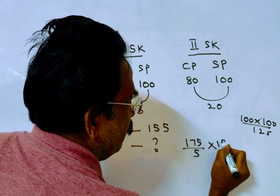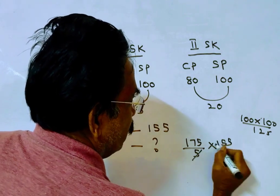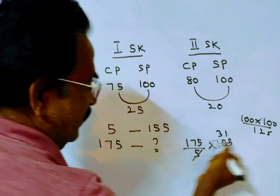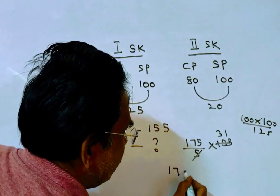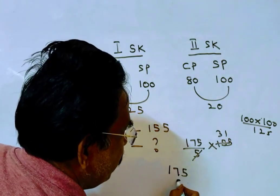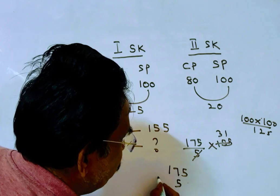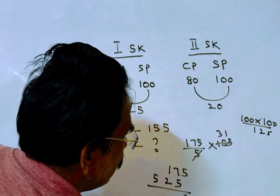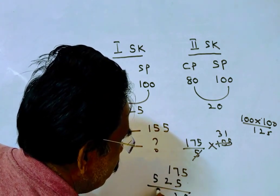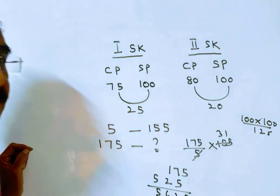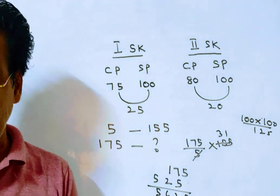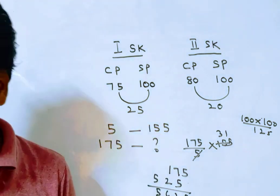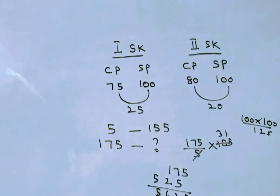Using proportion: if 5 gives 155, then 175 gives the answer. The calculation gives us the final sum. Thank you.